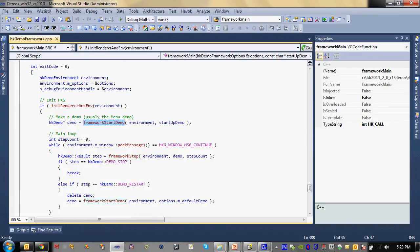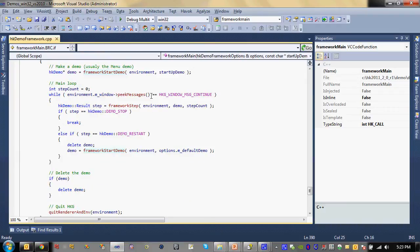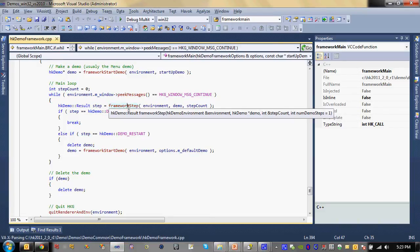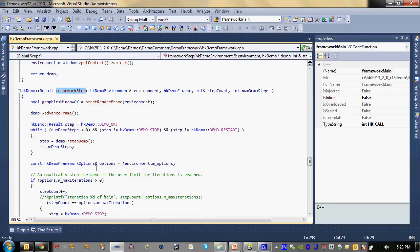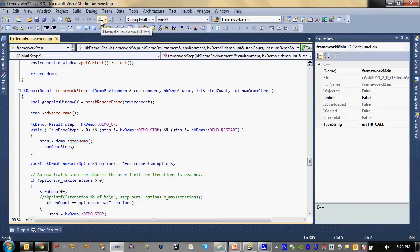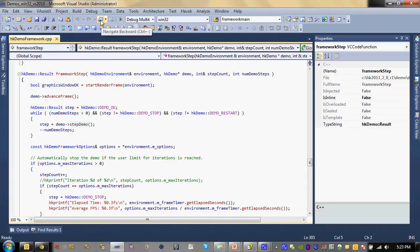And now that we have our demo pointer, we start looping. And this just keeps looping and looping until the window no longer says continue, or the framework step returns stop me or restart me. And it keeps going and going like this. And in each step, it calls framework step. And framework step, if we dig into this, primarily, it does other things as well, but primarily handles step demo. And that's the function that is virtual that most demos will actually override.